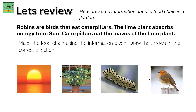First you should draw the sun because the sun is the main source of energy. The lime plant is second in the food chain since it is a producer and needs the sun to grow. Then comes the caterpillar, as caterpillars eat the leaves of the lime plant, so the lime plant arrow is directed towards the caterpillar. Finally, the arrow from the caterpillar is directed towards the bird because the bird eats the caterpillar.